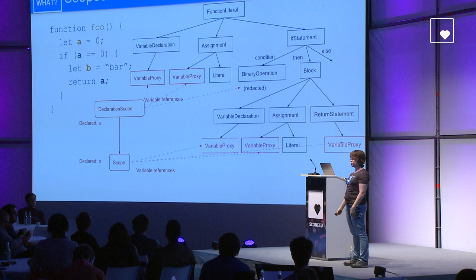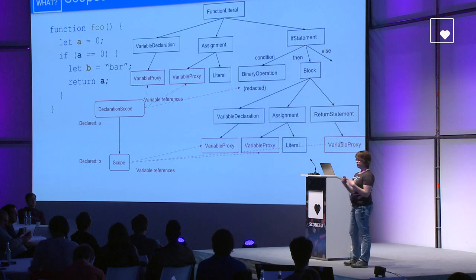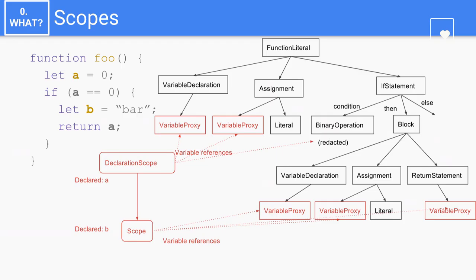In addition to the AST, the parser also generates scopes where the variables are declared. For the function, there is one declaration scope, and for the if statement body, there is another scope. The declaration scope contains the variable A, and the if statement body contains the variable B. The scopes also contain the variable references — the variable proxies — that occur in the code which belongs to that scope.